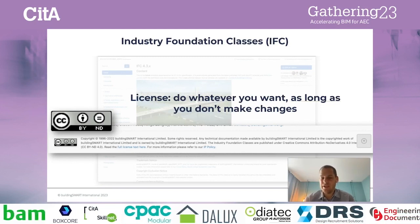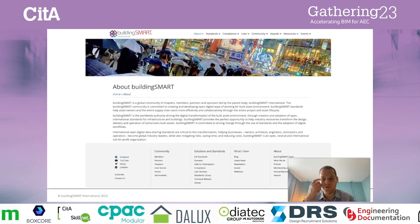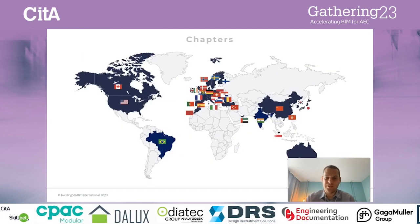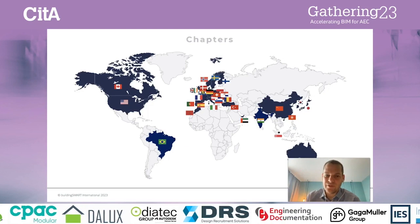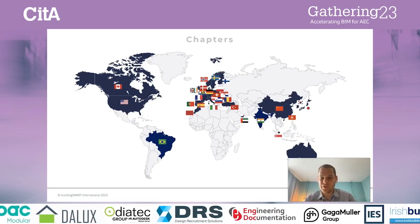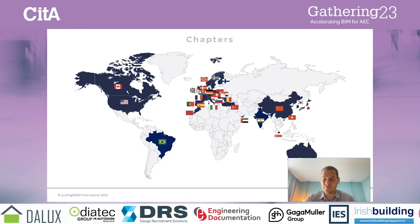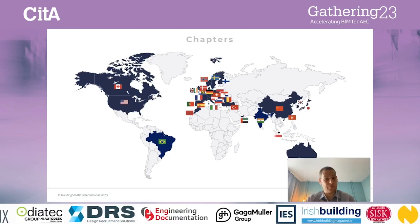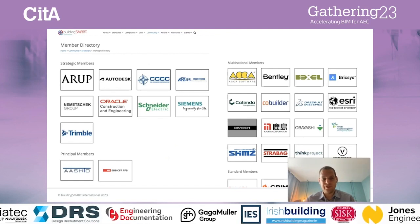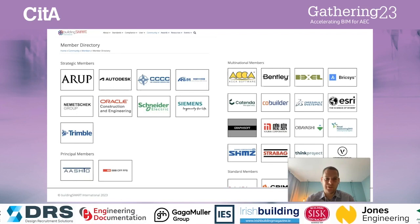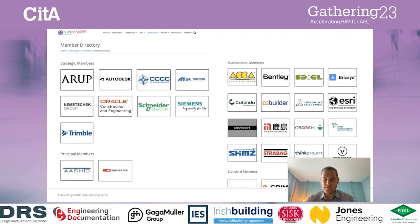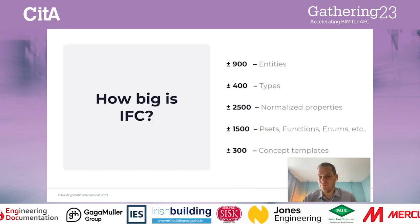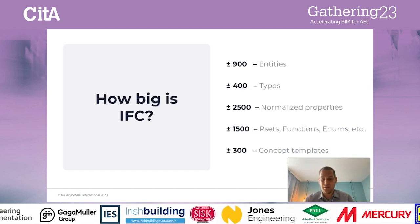This consensus-driven process is what we do within Building Smart. We're a global organization with many different chapters worldwide — covering about 20 different regions now. Recently we added Brazil and India, and Ireland is also represented as a formal chapter together with the UK. We are a membership-driven organization with different membership levels that give you different perks — the big names are all on our member list. And we have a lot of different working groups that work on standards, best practices, and use cases.